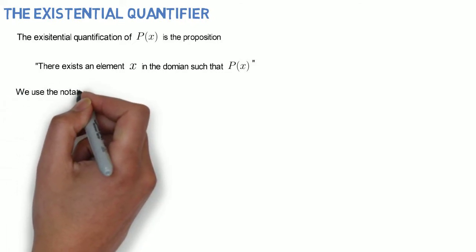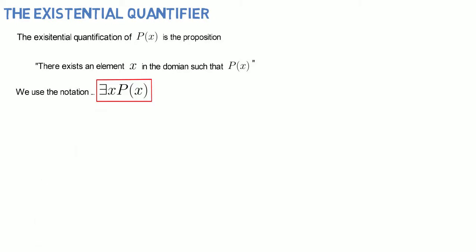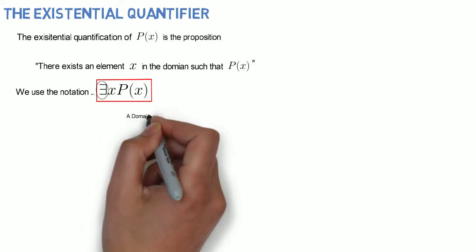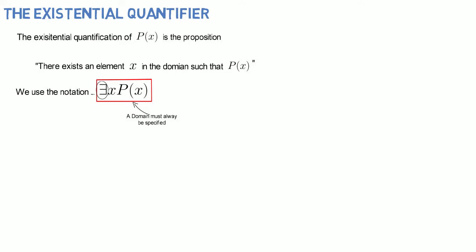We use the notation ∃x P(x). This symbol is used for the existential quantifier. Note that a domain must always be specified when a statement ∃x P(x) is used.